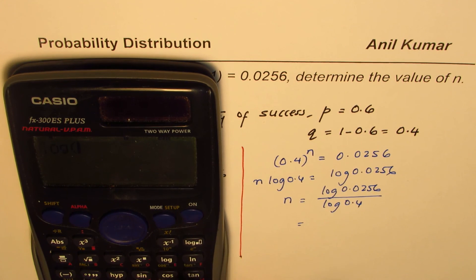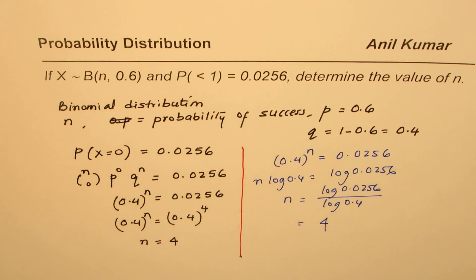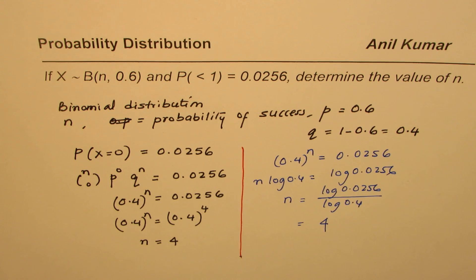So let's do it like that also. So we have log of 0.0256 divided by log of 0.4, which is also equal to 4. So that was an alternate way of finding the same answer. So both are correct ways of doing it.